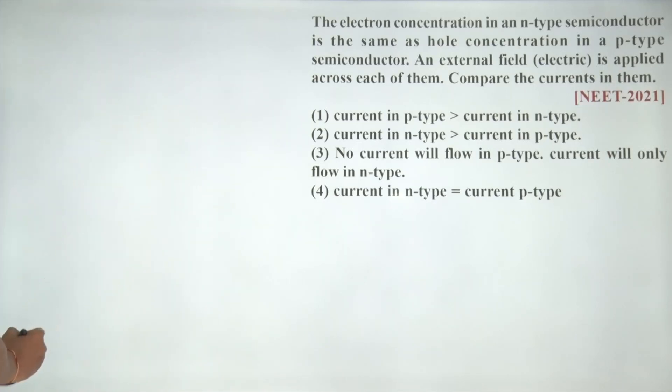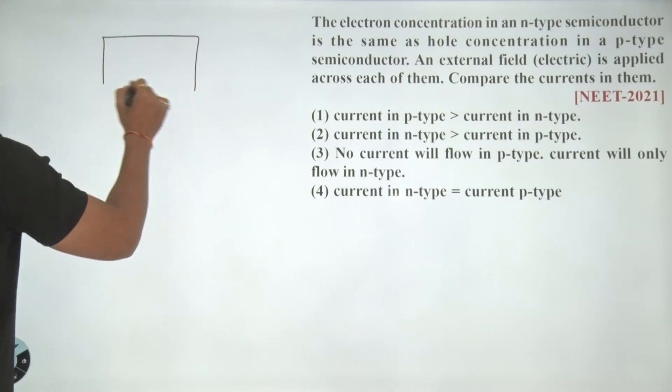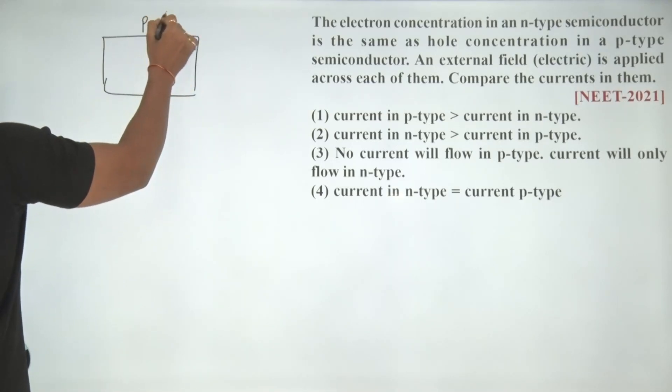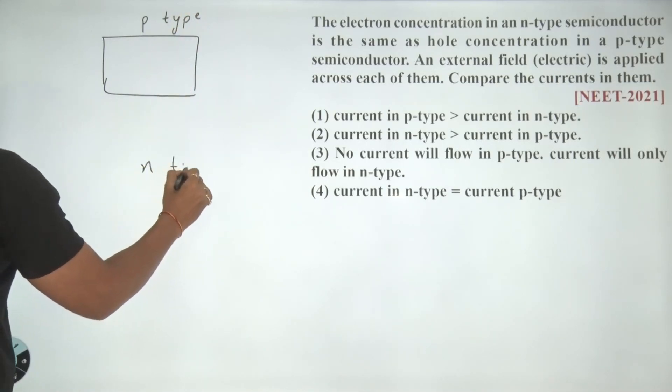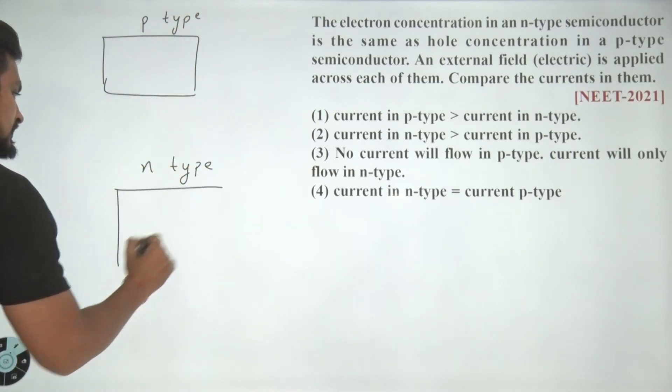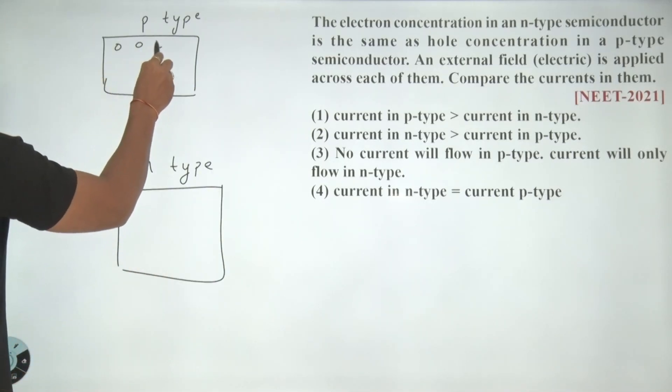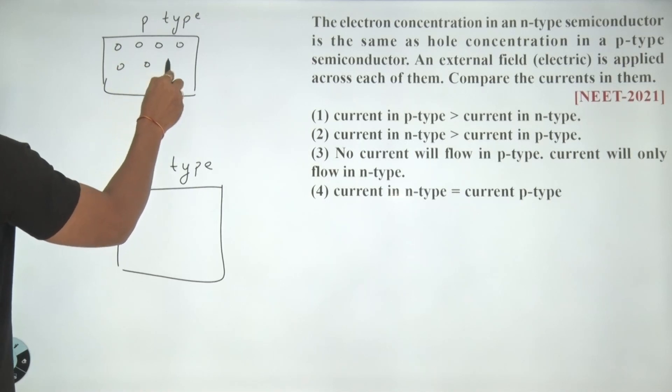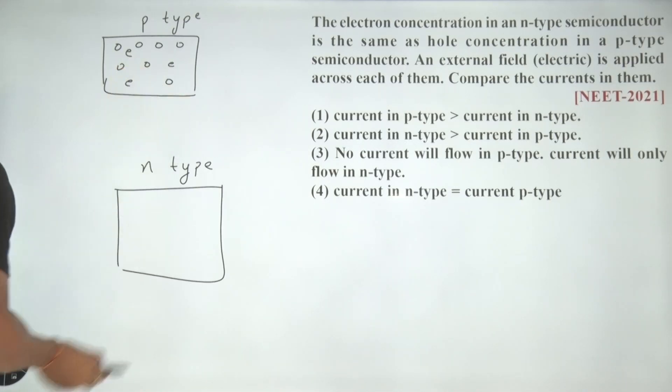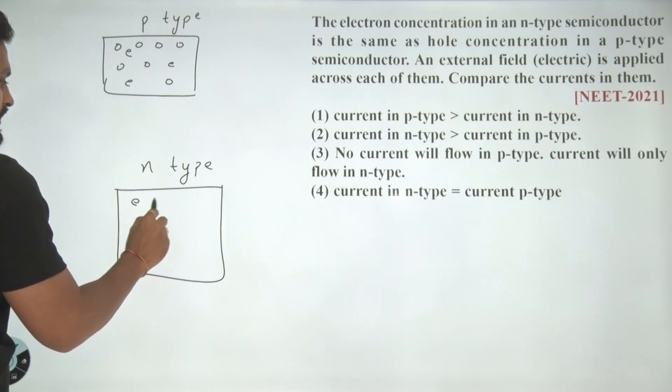Can I say, in this particular case, suppose this is my P type semiconductor and this is my N type semiconductor. In P type semiconductor, I have holes, majority holes. Of course, you would have electrons also but majority are holes. And in N type semiconductor, you would have majority electrons.